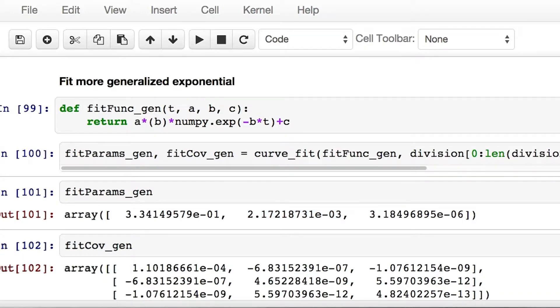And then the offset value, c, is quite small, 3.185 times 10 to the negative 6, pretty much negligible. So what does that mean? It means that the adjusted model looks something like this.